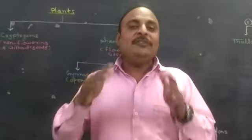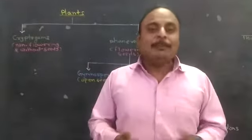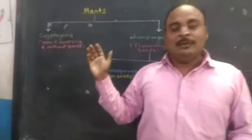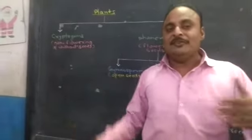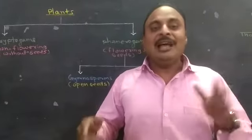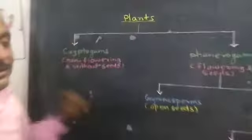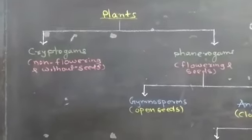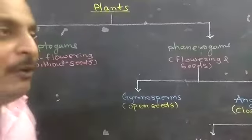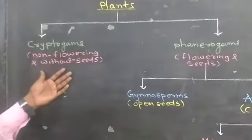There are many criteria by which we can classify plants. Now we are going to learn in detail how plants are classified. Plants are mainly classified into two categories: the first category is Cryptogam and the second one is Phanerogam. A plant that does not have a flower is a Cryptogam.